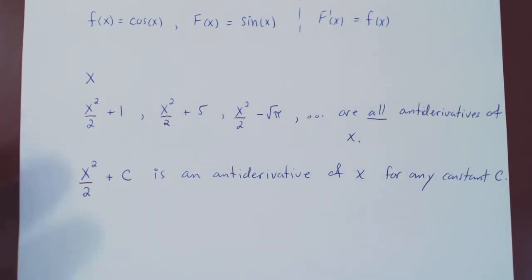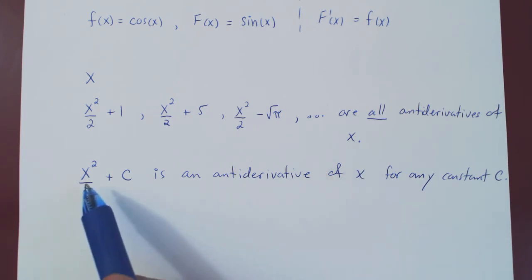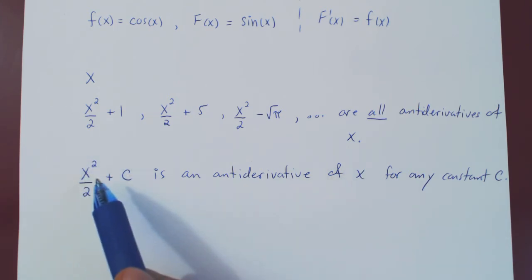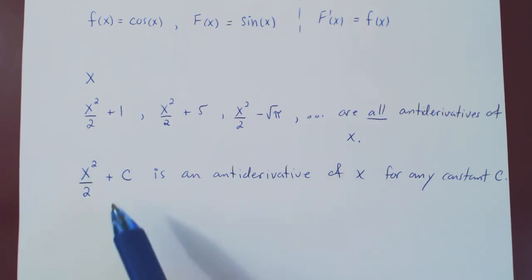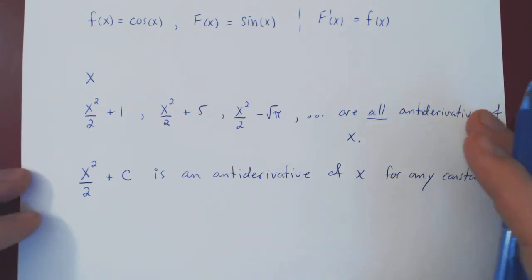Before we prove this, let's see if we can look at this from a very intuitive point of view. The claim is: if you find one antiderivative of a function — in our case x squared over 2 — all the other antiderivatives are just the one you found plus some constant. Let's see why intuitively this should make sense.